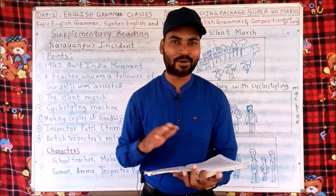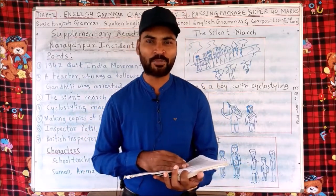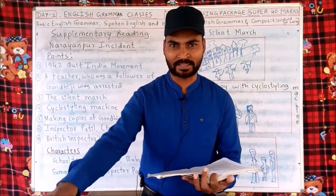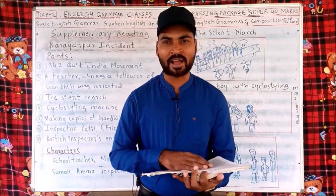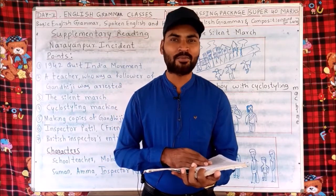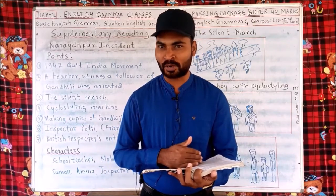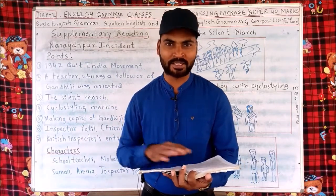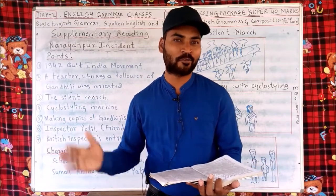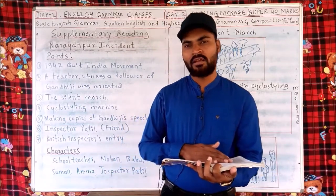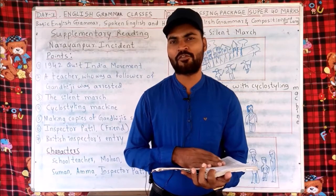They appointed Babu to watch over the movements of people outside; he sat in the front room keeping an eye on people's movements. Manju sat in the hall to pass messages from Babu to the people inside who were making copies of Mahatma Gandhi's speech. The work was in progress when a person on a motorbike came and stopped right in front of the gate.